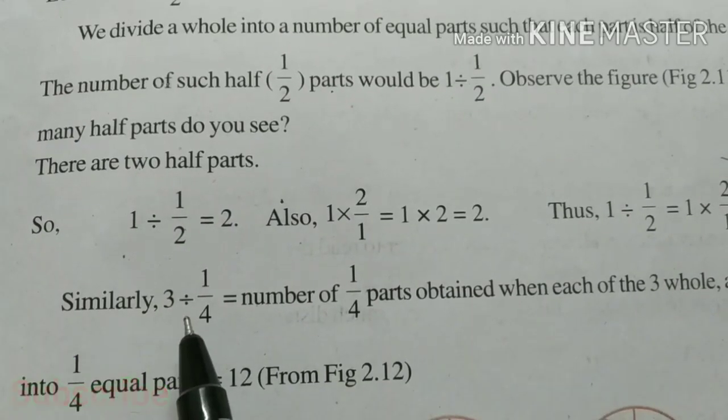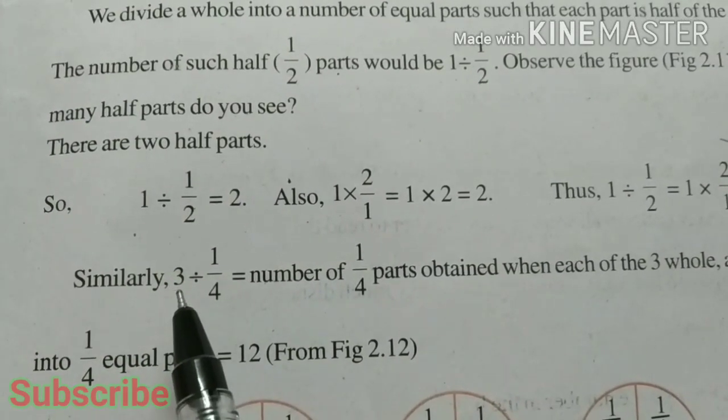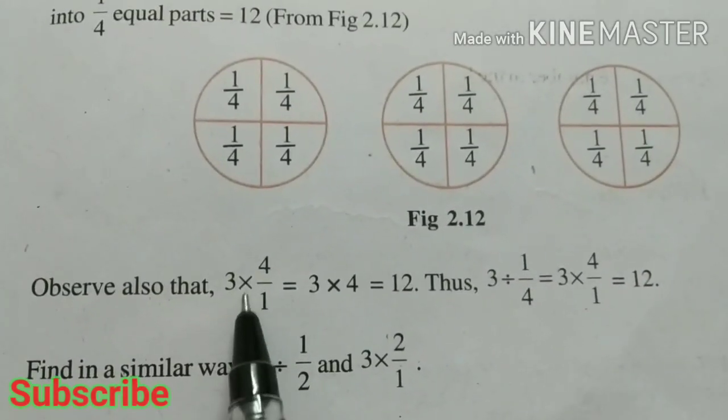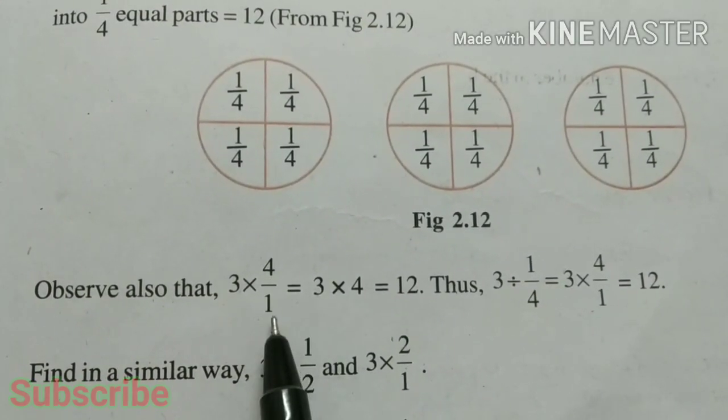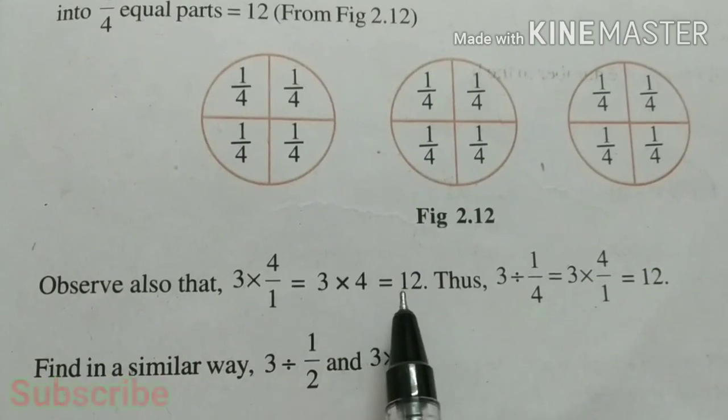Similarly, 3 divided by 1/4 is 3 × 4/1. Here you can see 3 × 4/1. That is 3 × 4 = 12.